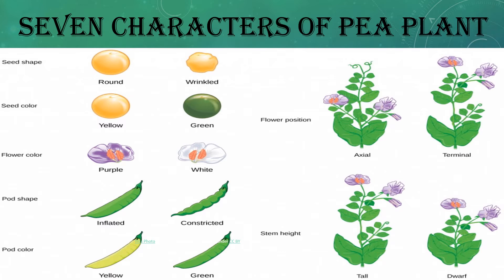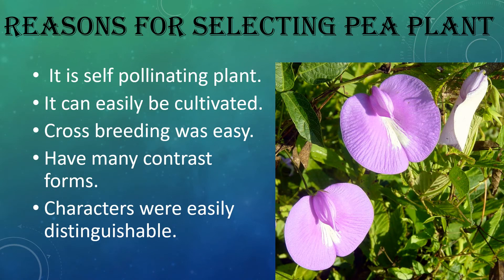These were the seven characters he considered for the cross. I told you there would be reasons why Mendel selected the pea plant only, and there were many reasons. A few of them are here.